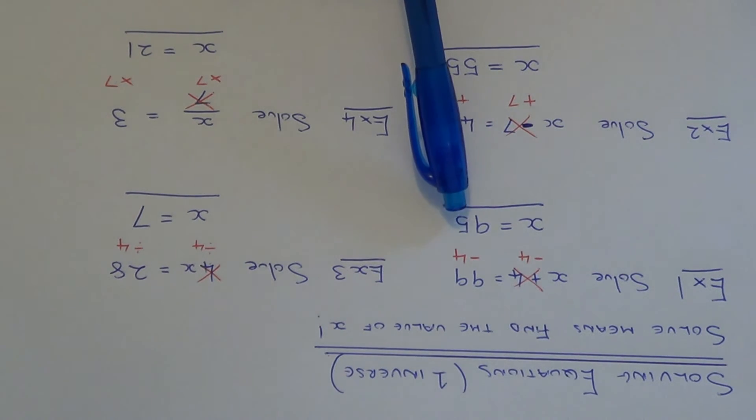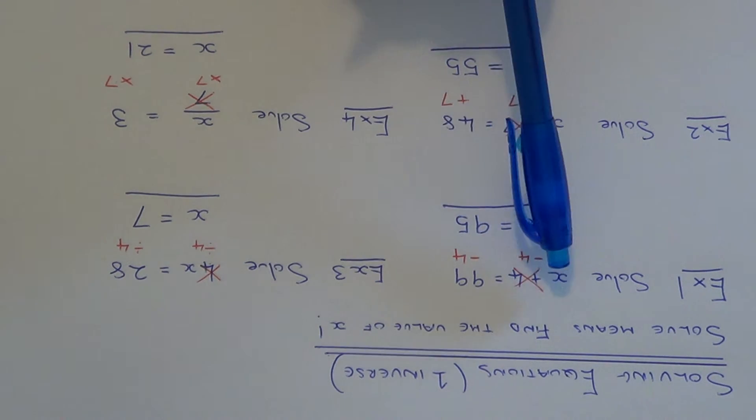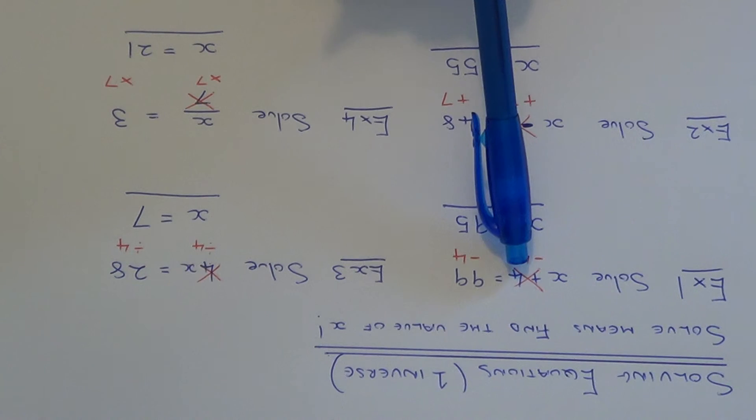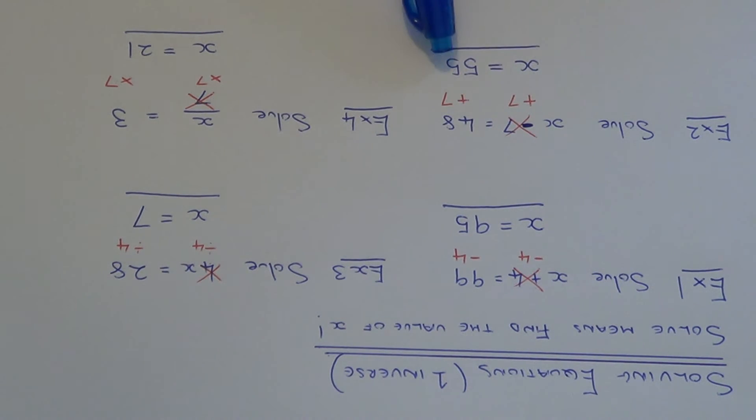So in your first one we got the answer 95. So you can see 95 add 4 is 99. Second one we had 55. 55 take away 7 gives us 48.